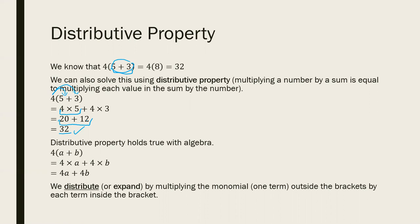This idea holds true not just with numbers — it holds true with variables as well. So if I give you something like four times (a plus b), you can distribute out that four: multiply four times a, and four times b. We end up getting 4a plus 4b, because four times a gives us 4a and four times b gives us 4b. This is actually necessary here because unlike the first example, we can't add a and b together — they're not like terms.